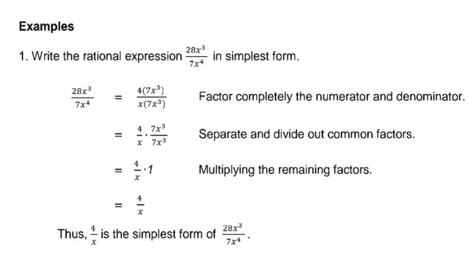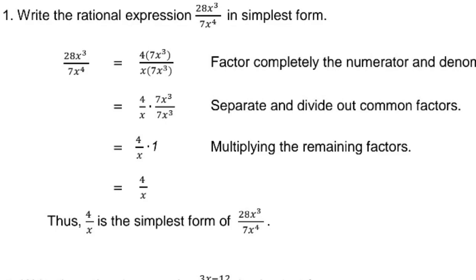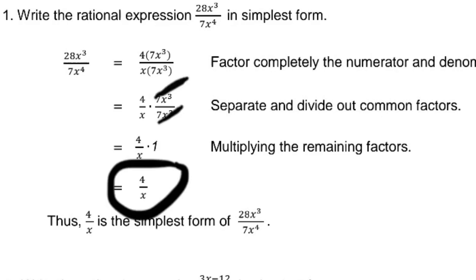We factor completely the numerator and denominator. 28x cubed factors as 4 times 7x cubed, and 7x to the fourth factors as x times 7x cubed. The common factor is 7x cubed. So we have 4 over x times 7x cubed over 7x cubed. Since 7x cubed over 7x cubed equals 1, we get 4 over x times 1, which equals 4 over x. We can simply cancel out 7x cubed, giving us the answer 4 over x.